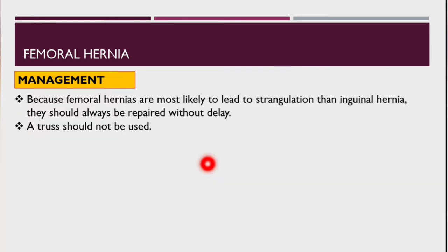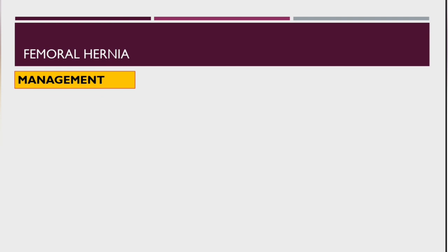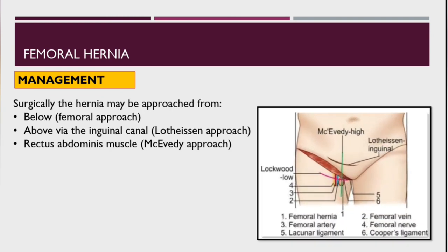For management: because femoral hernias are more likely to lead to strangulation than inguinal hernia, they should always be repaired without delay. Trusses used in inguinal hernia should not be used in femoral hernia. Surgically, the hernia may be approached from below — known as the femoral approach; from above via the inguinal canal — called the Lotheissen approach; or from the rectus abdominis muscle — called the McEvedy approach.